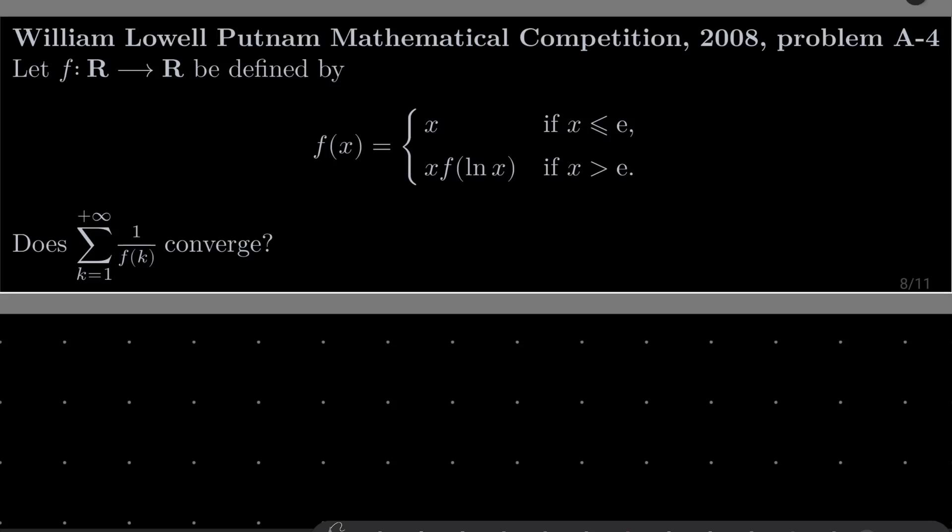Hello friends. In this video I'd like to solve the following problem from the William Lowell Putnam Mathematical Competition 2008, problem A4. Let f be a function from the set of real numbers into itself, defined by this implicit formula: f of x equals x if x is less than or equal to e, or x times f of natural log of x if x is greater than e. The question is: does the series from k equals 1 to infinity of 1 over f of k converge?